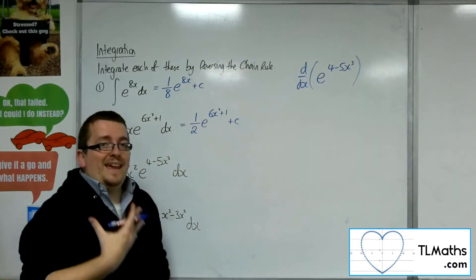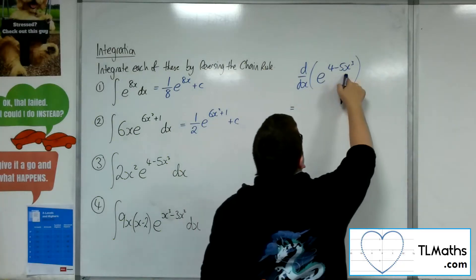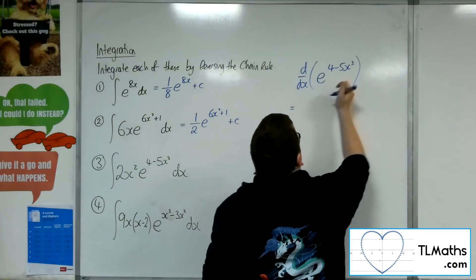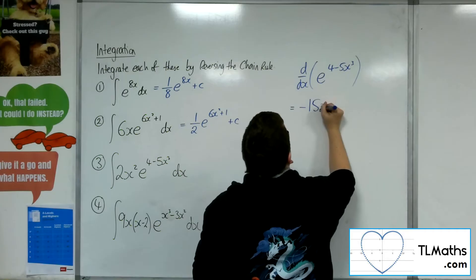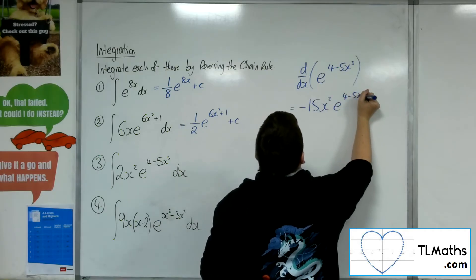So the derivative of the 4 minus 5x squared comes outside, so the derivative of the 4 minus 5x cubed is minus 15x squared. And I'll have e to the 4 minus 5x cubed.